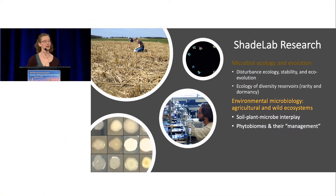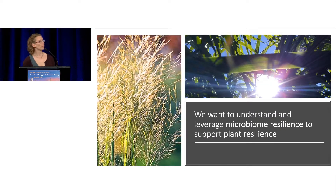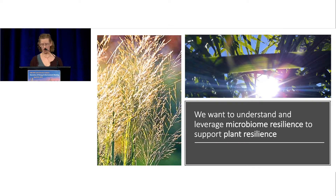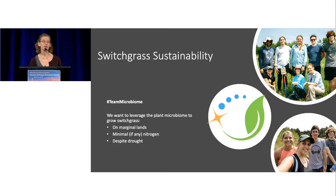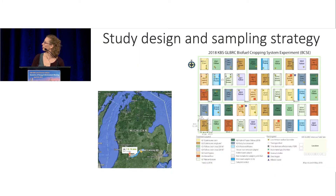Briefly touching on arm two — plant microbiomes — this work is with the Great Lakes Bioenergy Research Center. Our objective is to understand and leverage microbiome resilience associated with plants to support plant tolerance to stress. We're working with switchgrass and miscanthus, two perennial biofuel grasses. Our part of this large center focuses on growing switchgrass sustainably on marginal lands. It's a highly collaborative team with around 100 PIs, and we're part of one aim with about 10 research investigators.